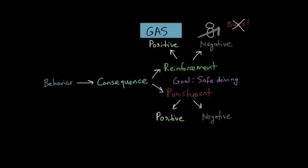Punishment, on the other hand, means it will decrease the tendency that a behavior will occur again. So if we're using the example of safe driving, we want to punish behaviors that are unsafe. Positive punishment means something is being added in an effort to decrease the tendency that a behavior will occur again.